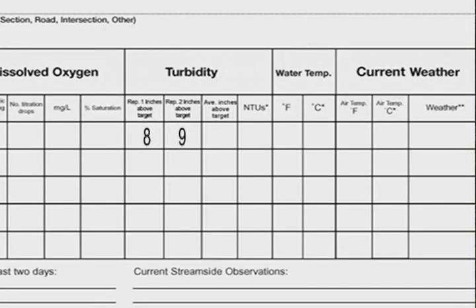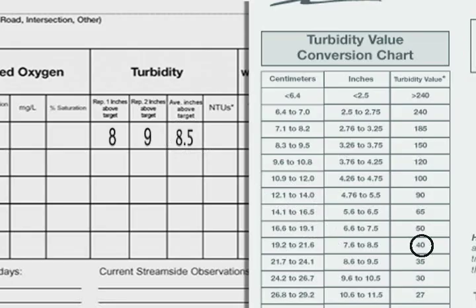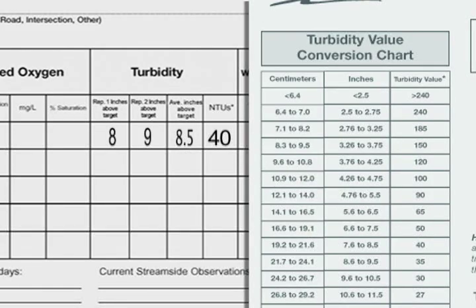What you need to do is take the average of the two measurements — add them together and divide by two. The next step is to get a conversion to NTUs, a unit understood by people who monitor turbidity professionally. There's a conversion form on the back of your datasheet to do this, so you'll convert your centimeters or inches into NTUs.